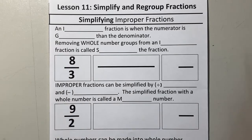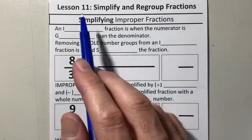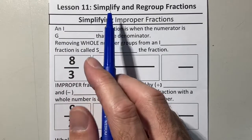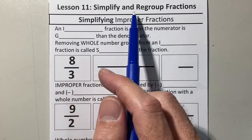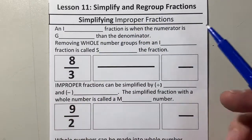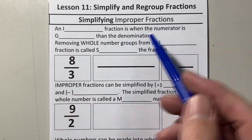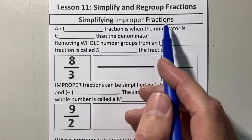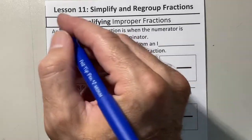This is Mr. Ambrose with a 6th grade math lesson. We're going to look at lesson 11 where we're going to simplify and also regroup fractions. The first type of fraction that we're going to simplify is going to be improper fractions.